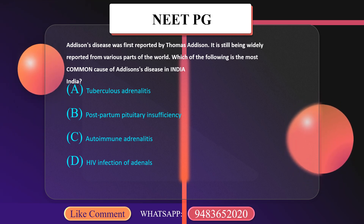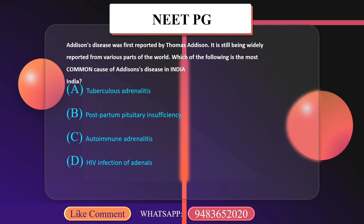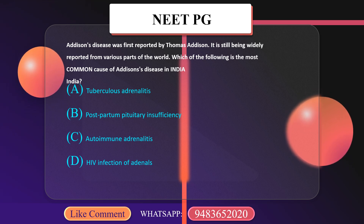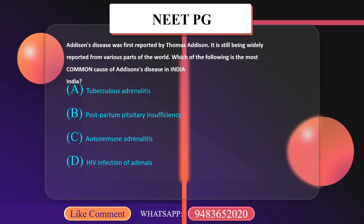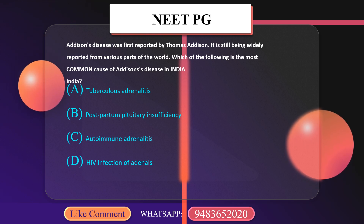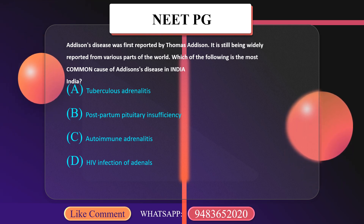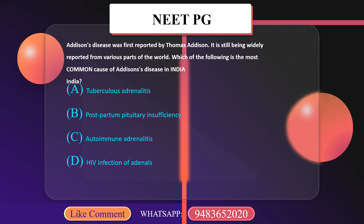A. Tubercular Adrenalitis. B. Postpartum Pituitary Insufficiency. C. Autoimmune Adrenalitis. D. HIV Infection of Adrenals.